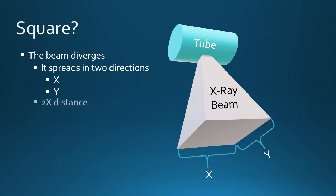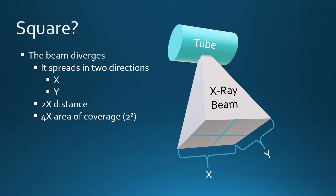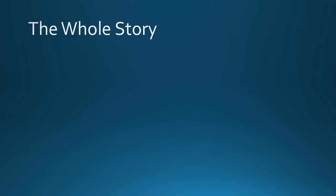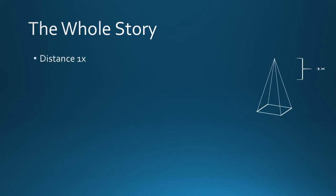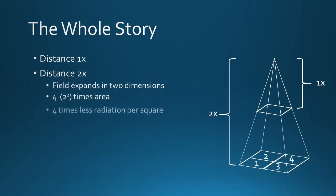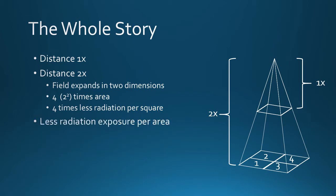So two times the distance equals four times the spread. To sum up, the useful or primary beam forms a pyramid with its apex arising from the focal spot of the anode. As it travels from the apex it spreads out in an ever-widening, divergent fashion. At some distance — let's call it 1x — it covers a given area, let's call it one square. At twice the distance, the spreading divergent x-ray beam now covers an area four times larger, because the radiation expands in two dimensions. The same amount of radiation is distributed over a larger area.